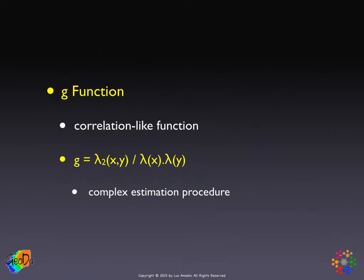This function is quite difficult to estimate because it is based on concepts in the limit — the dx and dy areas go to zero. In practice, we carry out a discrete approximation. Just keep in mind it is quite complex. The reason this is yet another function is that, just like the J function in our discussion of nearest neighbor statistics, this pairwise correlation function has a tight connection to the characteristics of theoretical spatial process models, and some authors prefer it as the best way to characterize a process.